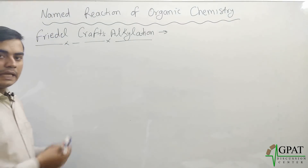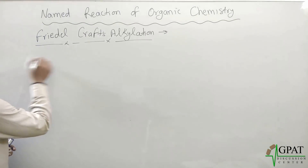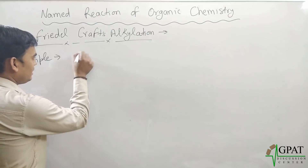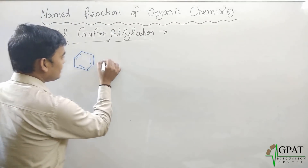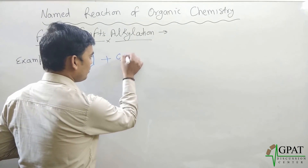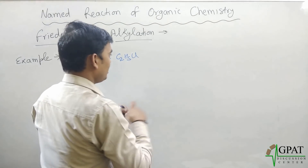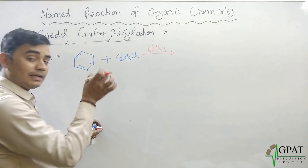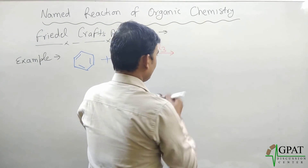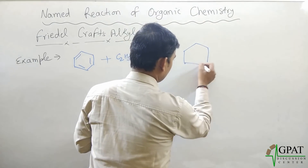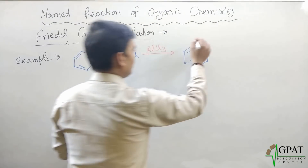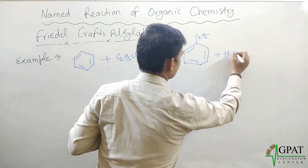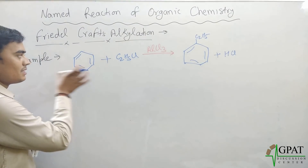The final product is the alkylbenzene compound, the byproduct is HX, and the Lewis acid AlCl₃ is recovered. This is the main mechanism behind Friedel-Crafts alkylation. Now I will discuss an example: benzene reacts with ethyl chloride in the presence of aluminium chloride as the Lewis acid catalyst.